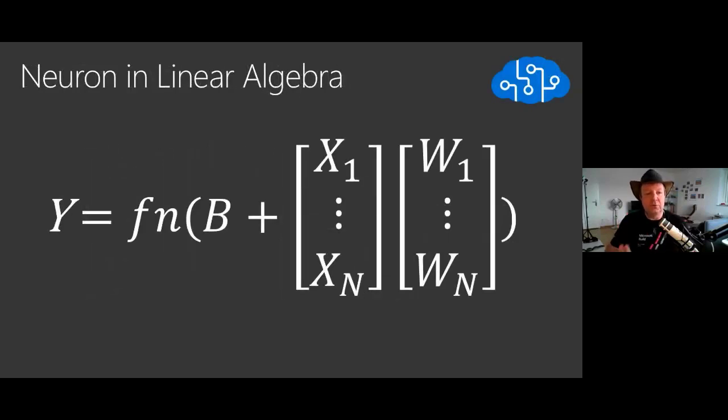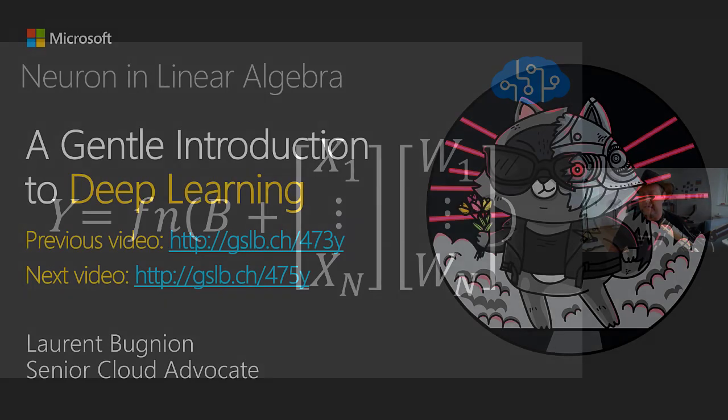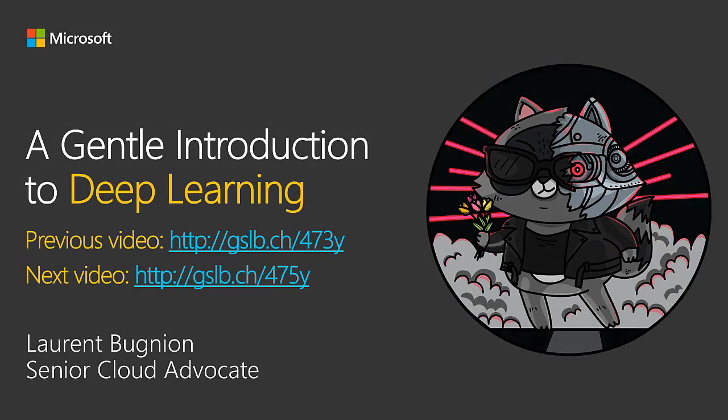So if we take the neuron with linear algebra, this is what we get. And of course the difference with before is that now it's going to go faster, but still training a model takes a lot of time and we'll understand later why this is taking a lot of time. It's a very expensive process in terms of effort.